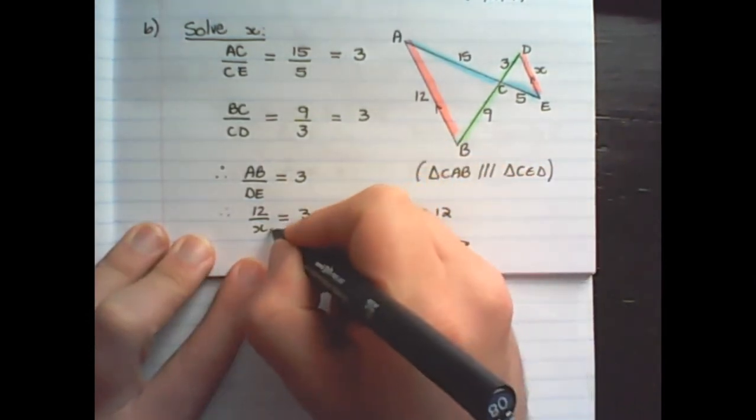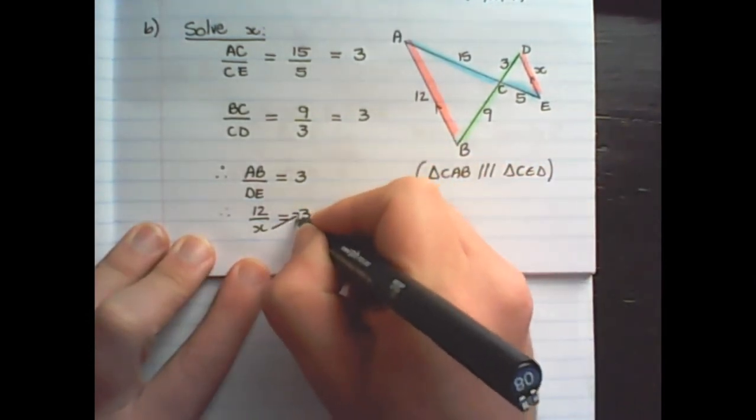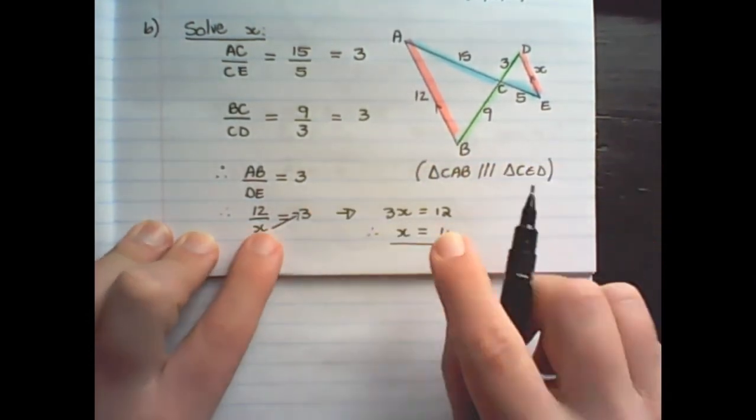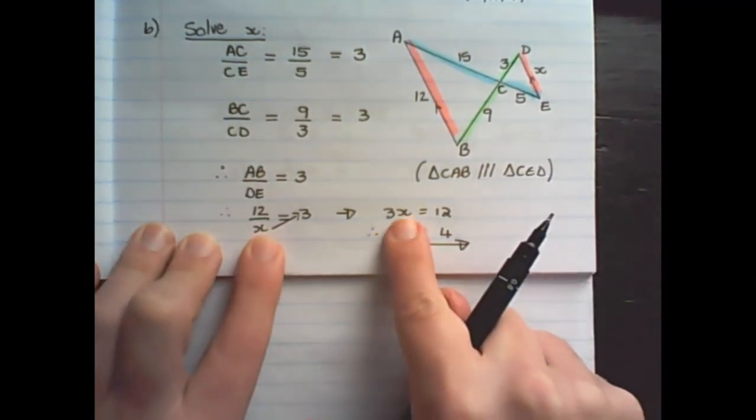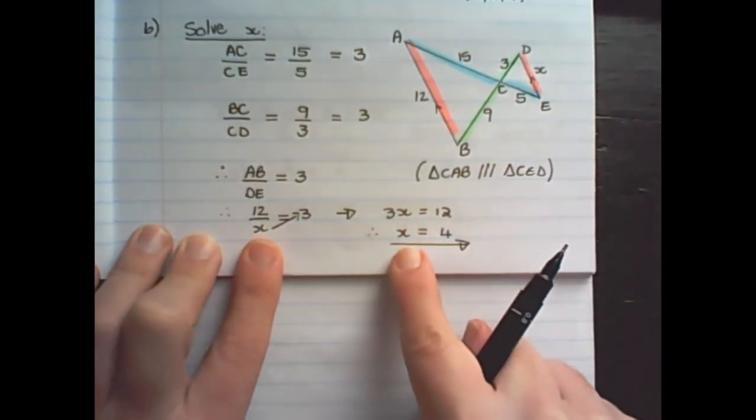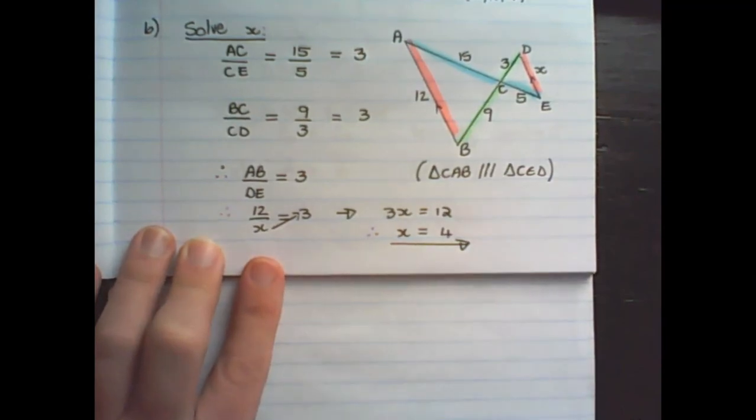Now I can find x by multiplying x with 3 to get 3x is equal to 12. And I divide both sides by 3. So therefore, x is equal to 4.